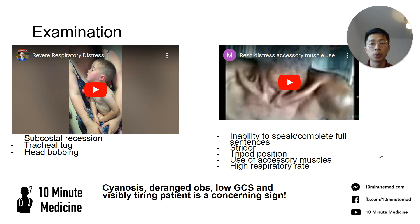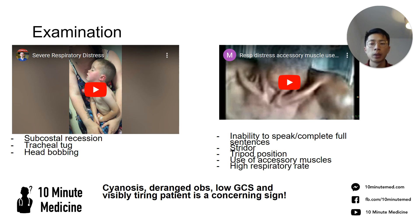You can also see cyanosis, a low GCS, and abnormal observations — however, these are actually quite late signs, so you want to be able to pick up signs earlier. Someone who is visibly tiring or has a silent chest is a very concerning sign, and you should absolutely be calling your seniors as soon as possible.